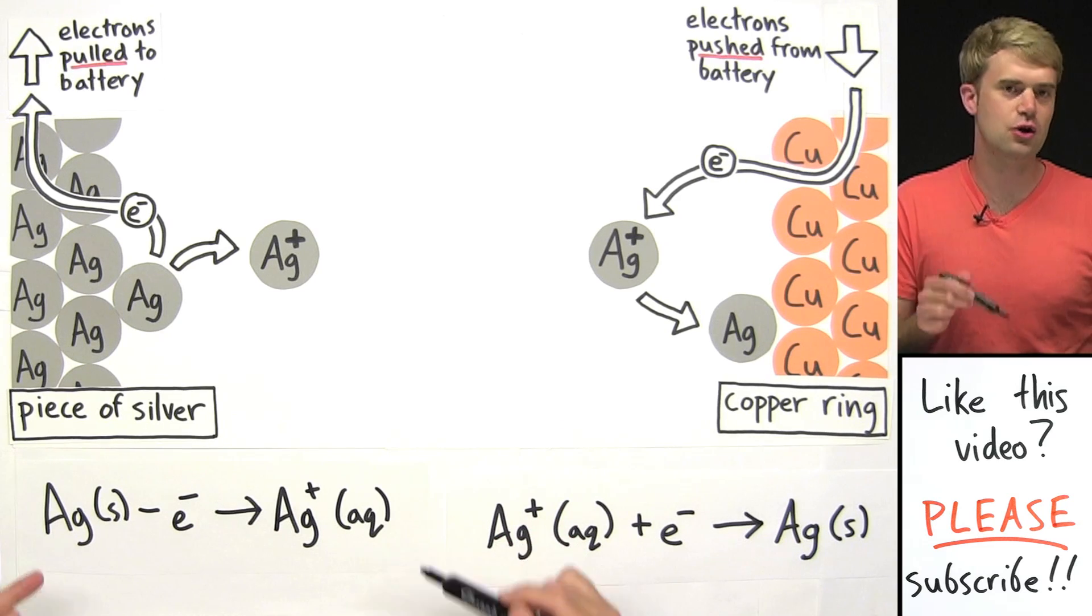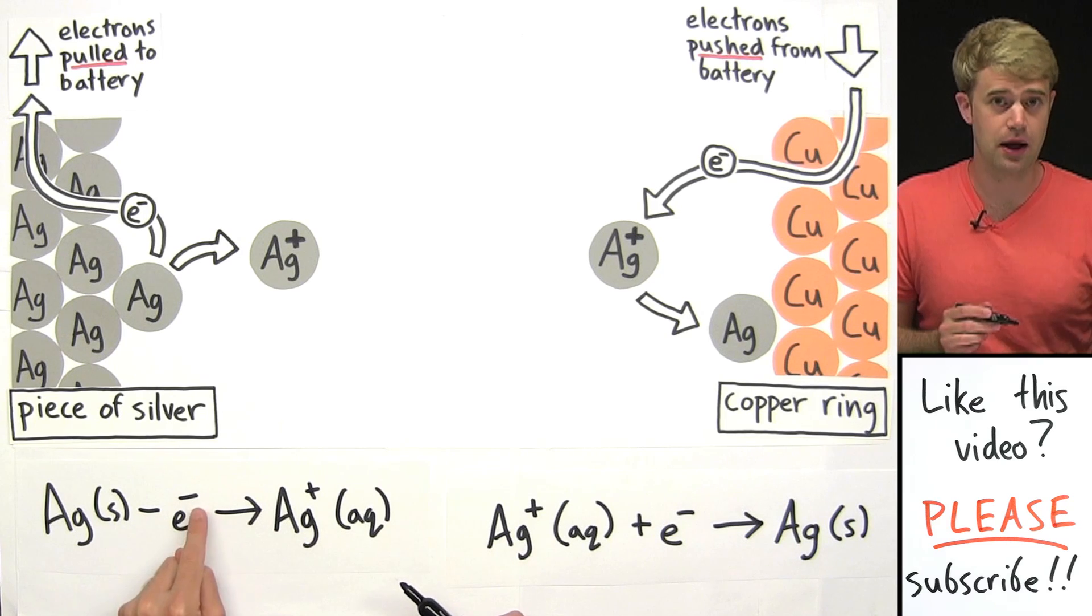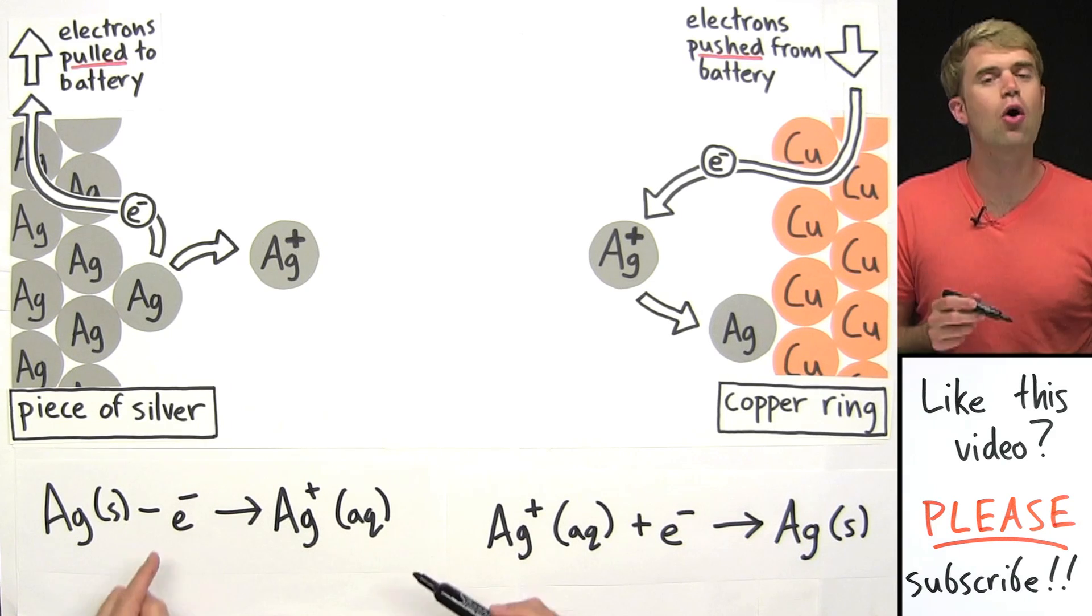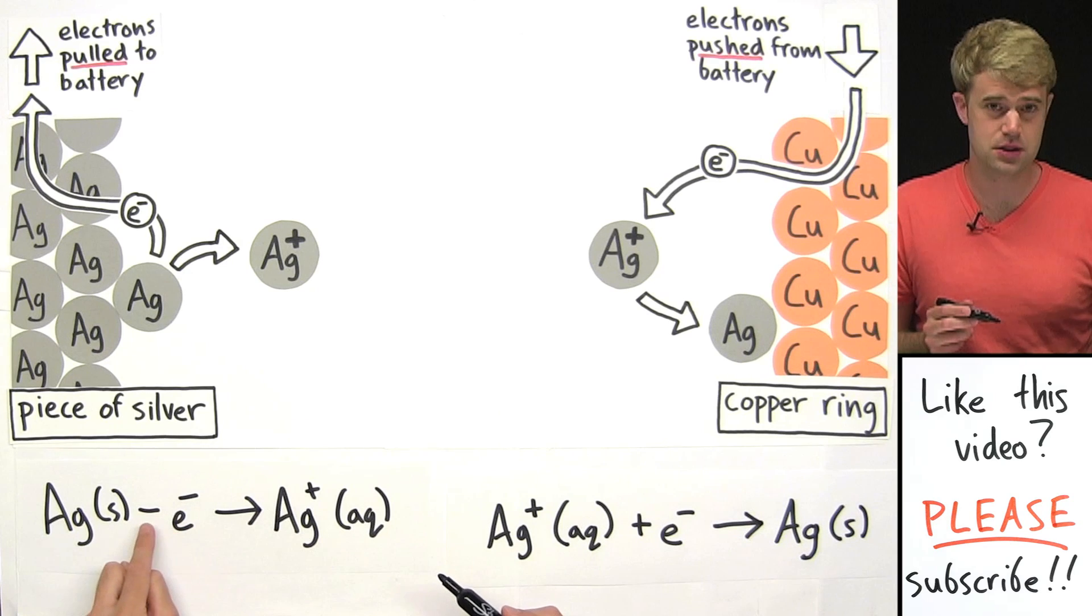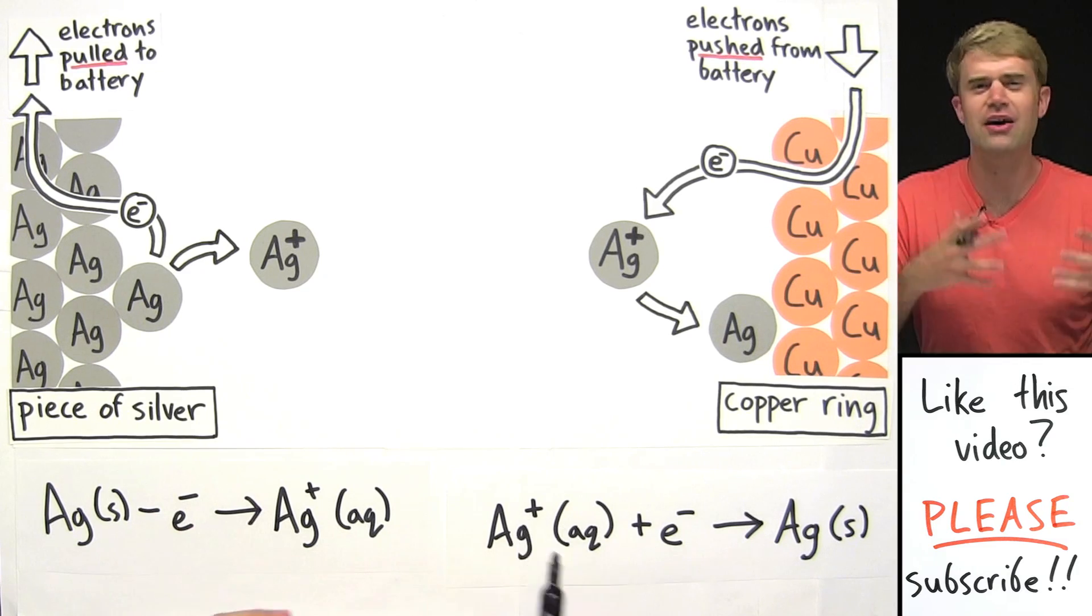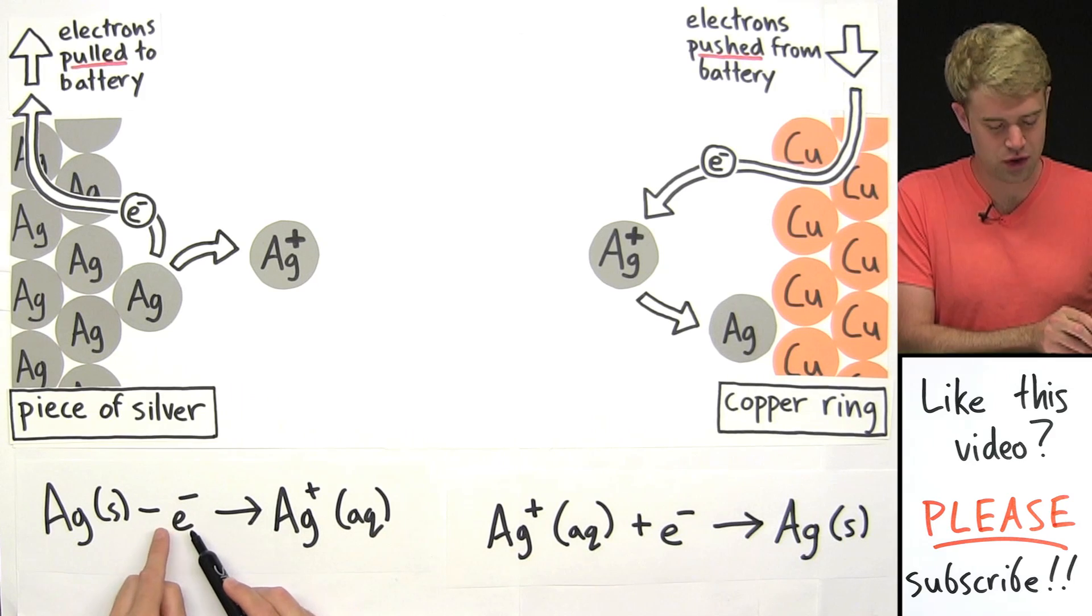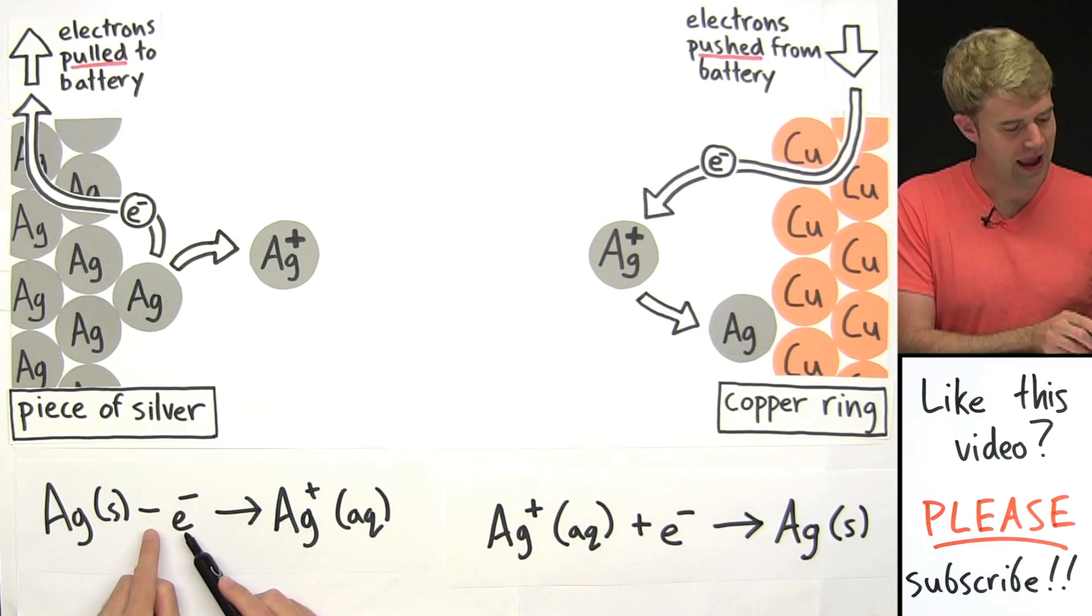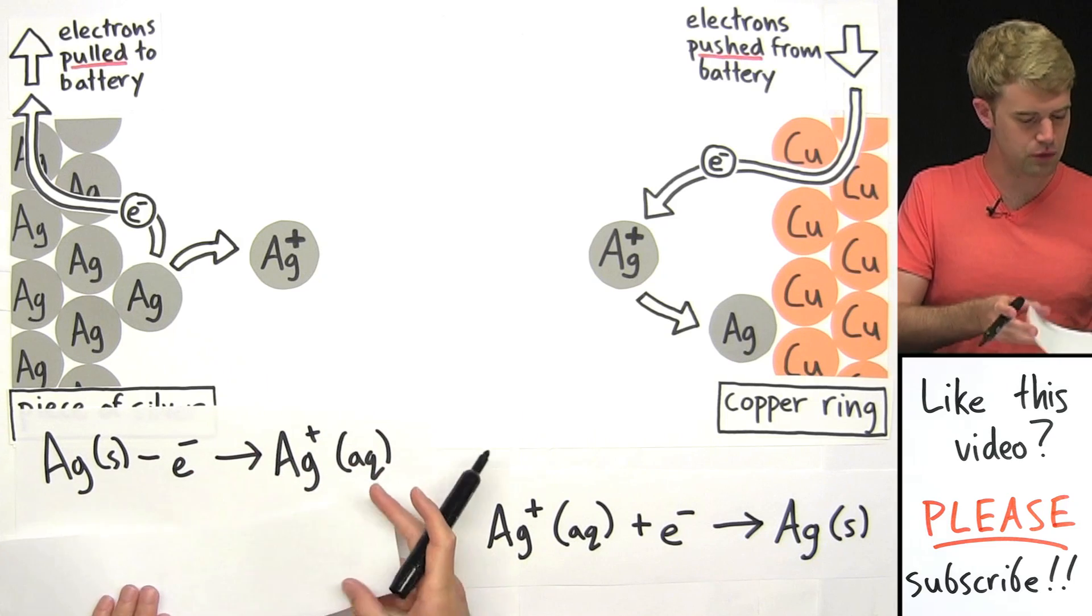Now what's wrong with this equation? Well, it's this minus sign right here, this minus E minus. Because in chemical equations, you can't subtract things. You can only add them. So I can't put a minus sign in front of this electron. Well then how do I show that this Ag is losing an electron if I can't use a minus sign? Well, what I do is I move the electron to the other side of the equation, just like you do in a math problem, and this will change its sign from negative to positive.